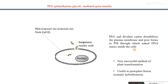PEG and divalent cations generally destabilize the plasma membrane, and pores form through which naked DNA enters inside the cell. It is a very successful method for plant transformation and is also useful in protoplast fusion. Here, a protoplast is a plant cell devoid of a cell wall, and protoplast fusion helps in somatic hybridization — the formation of a hybrid cell by the fusion of protoplasts of two different plant species. We will discuss somatic hybridization in the next class. This method is very popular for inserting foreign DNA inside the target cell, especially plant cells.